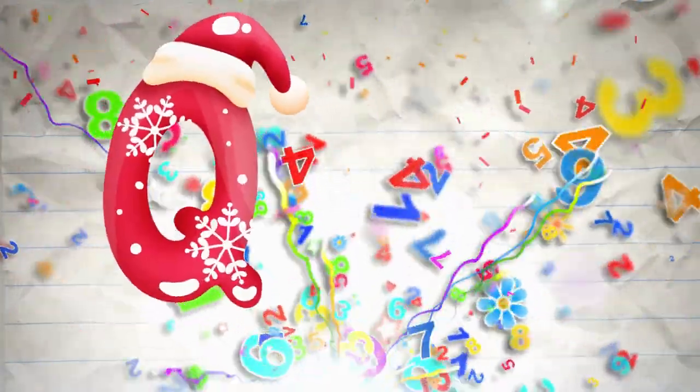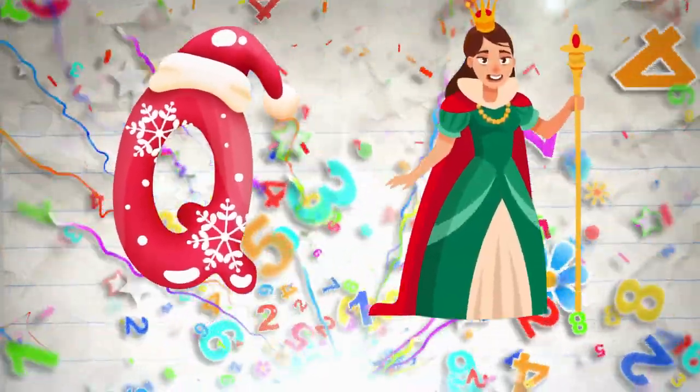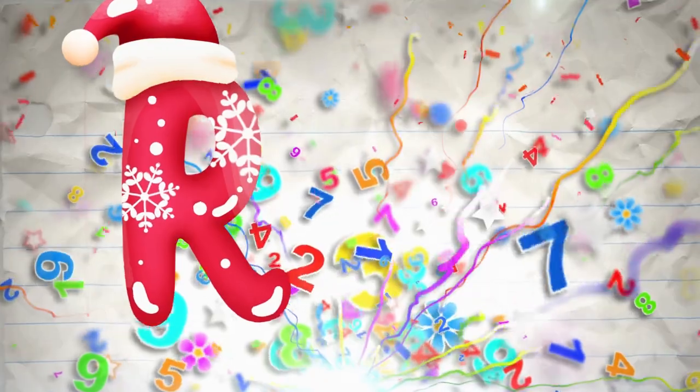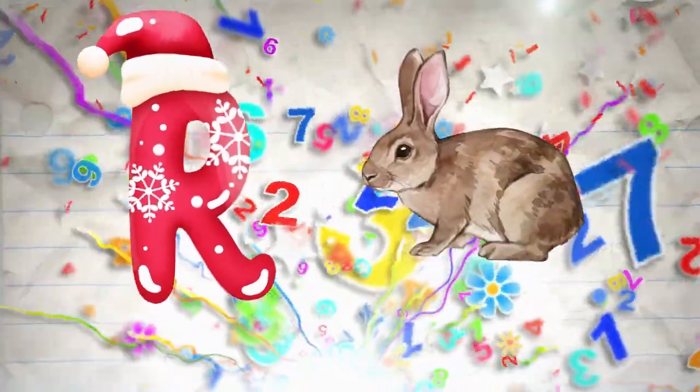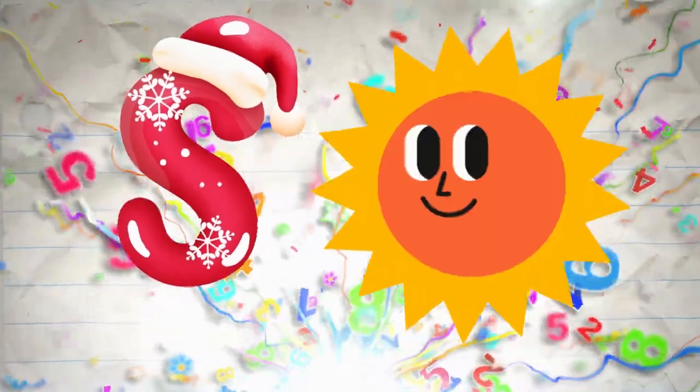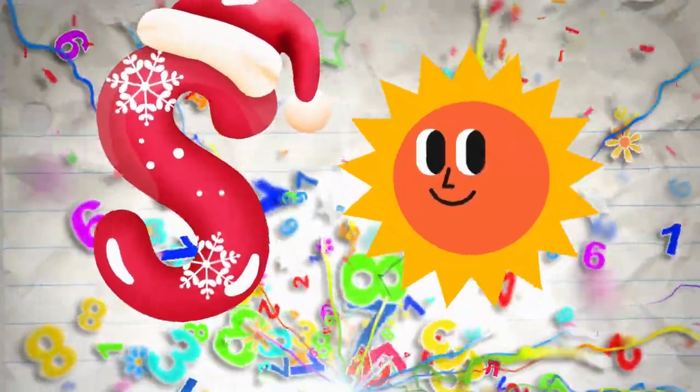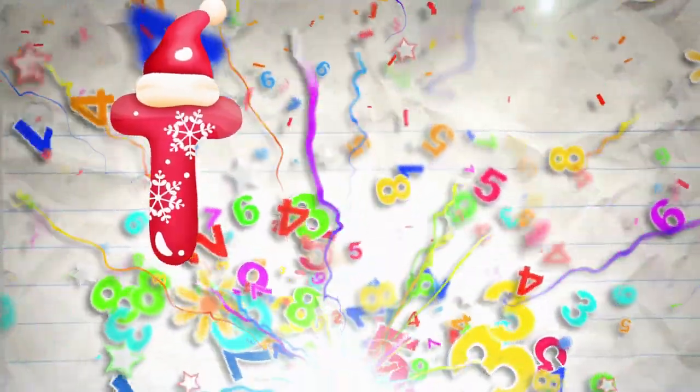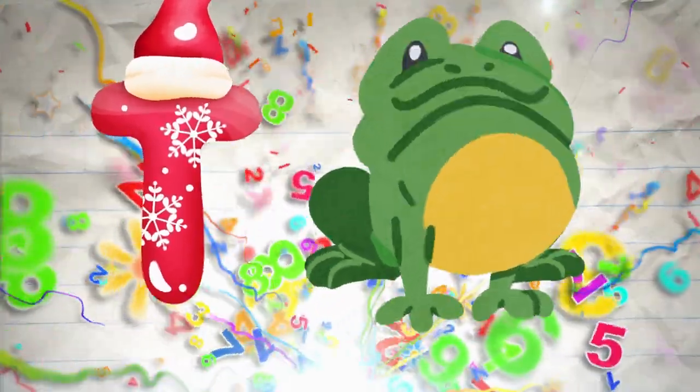Q is for queen, q-q-queen. R is for rabbit, r-r-rabbit. S is for sun, s-s-sun. T is for toad, t-t-toad.